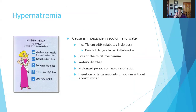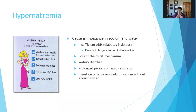Hypernatremia — hyper means too much, nat is sodium, emia is in the blood — is an imbalance of sodium and water. Insufficient antidiuretic hormone, also known as diabetes insipidus, results in a large volume of dilute urine, so you lose a lot of water and retain sodium. Depression of the thirst mechanism can cause hypernatremia because you're not getting enough water to dilute it. Other causes include watery diarrhea, prolonged periods of rapid respiration, and ingestion of large amounts of sodium without enough water.